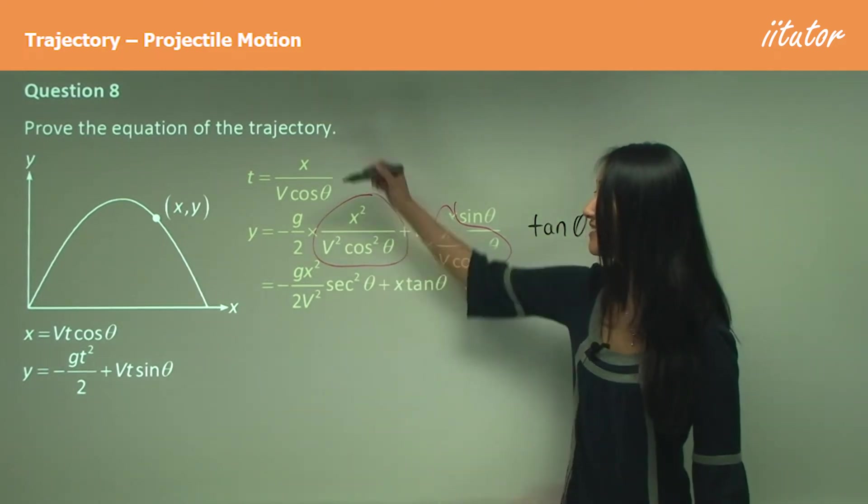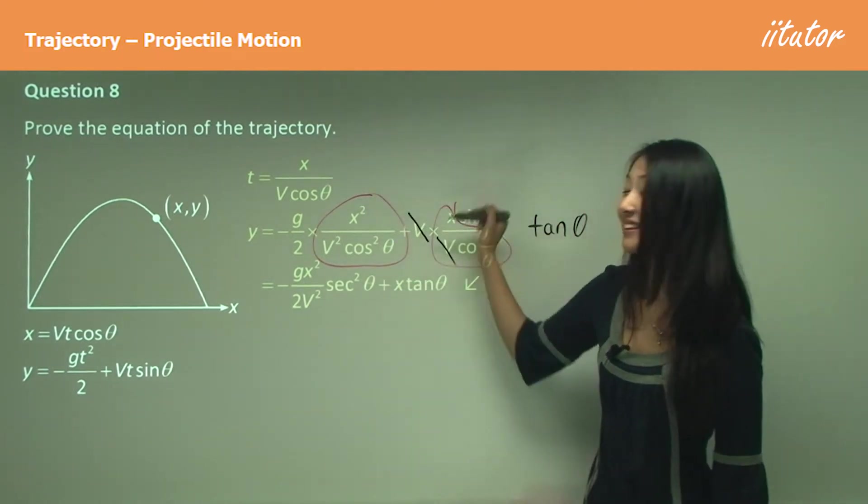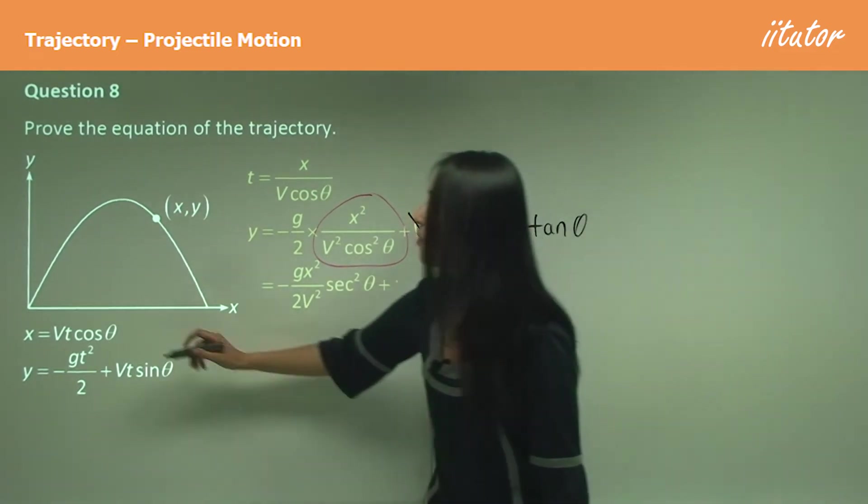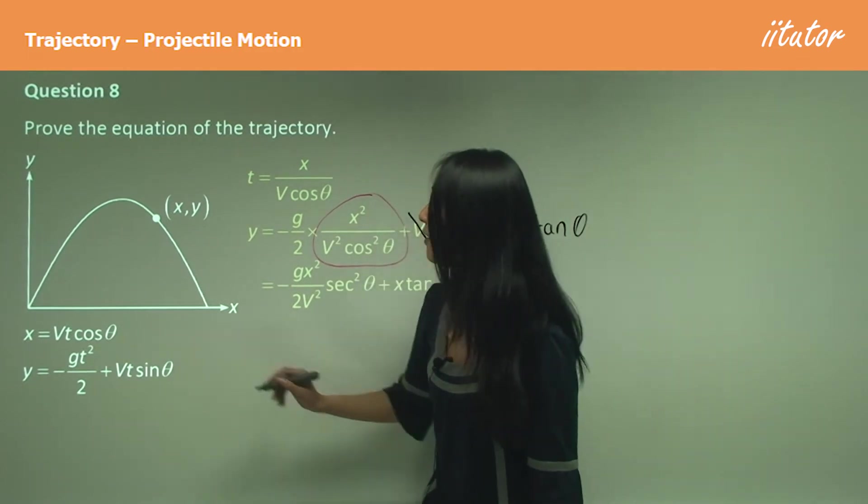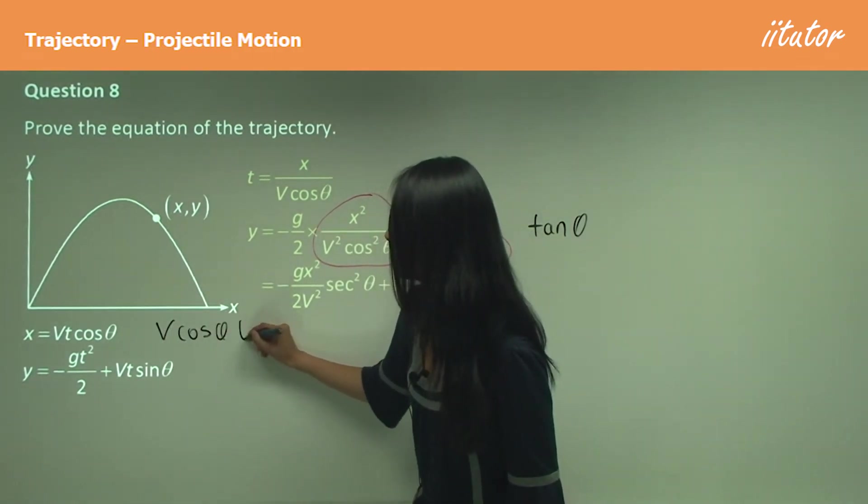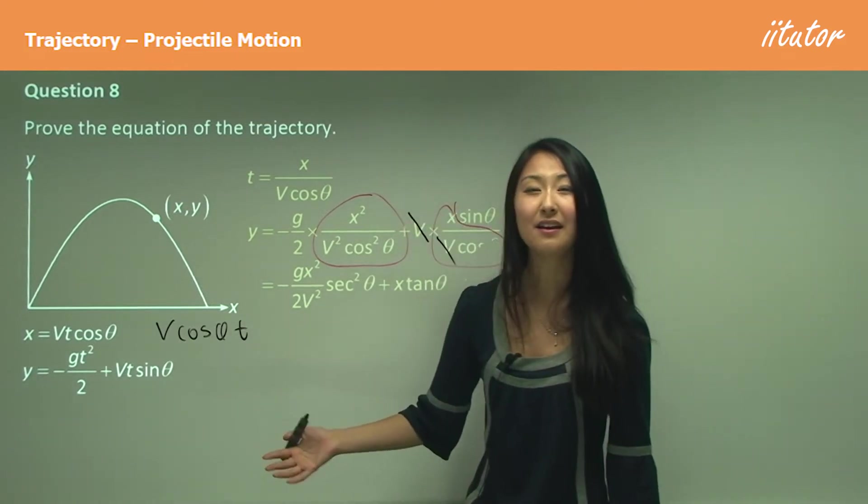A couple of students have asked, why does that t go there? Wouldn't it make a lot more sense to just write v cos θ times t, because then it's easier to get rid of the t? Well, the only reason is when you write it like that, it's easy to confuse as that is an angle.